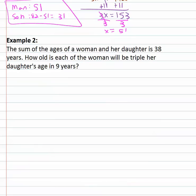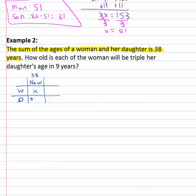Let's do one more example where we see the sum now and need to work that into our table. The sum of the ages of a woman and her daughter is thirty-eight years. How old is each if the woman will be triple her daughter's age in nine years? We've got a woman and her daughter, and right now the sum of the ages is thirty-eight. We don't know how old the woman is, but the daughter would be thirty-eight minus x — the total minus x. The change is in nine years, so we add nine to each cell: x plus nine for the woman, and combining like terms, thirty-eight plus nine is forty-seven minus x for the daughter.